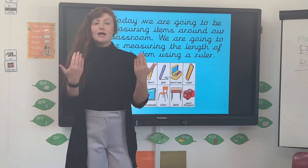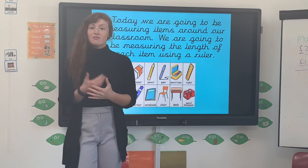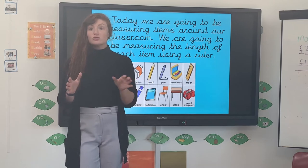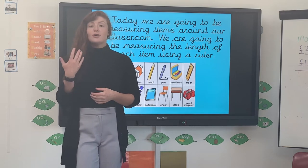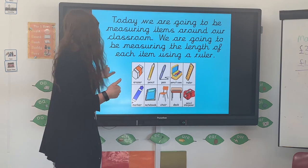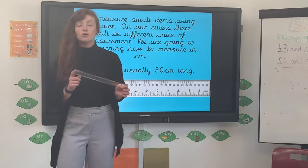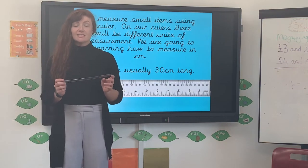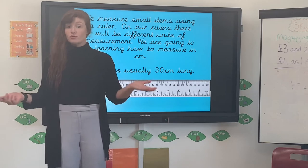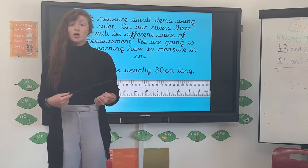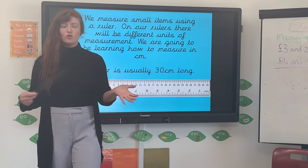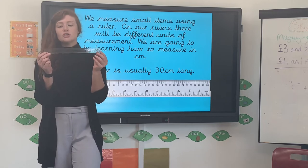Now if we were in class, I might say: here's a list of items, please go and measure them using our rulers or metre sticks. But we don't have that at home and you might not have a ruler either, so that's why today we're going to sit through this. If you have got a ruler at home, that's absolutely fantastic. I'm going to show you exactly how to use it to measure the length of items around your home — a book, a table, your bed, maybe even the length of your garden.